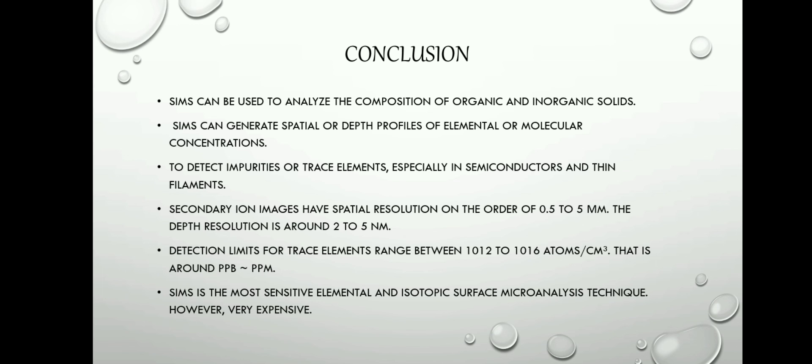Lastly, the conclusion. Secondary Ion Mass Spectrometry can be used to analyze the composition of organic and inorganic solids. It can generate spatial or depth profiles of elemental or molecular concentrations to detect impurities or trace elements, especially in semiconductors and thin films. Secondary ion mass spectrometry has spatial resolution on the order of 0.5 to 25 micrometers and depth resolution around 2 to 5 nanometers.